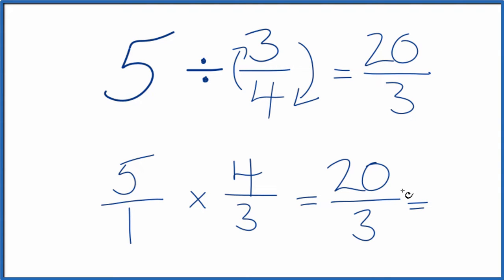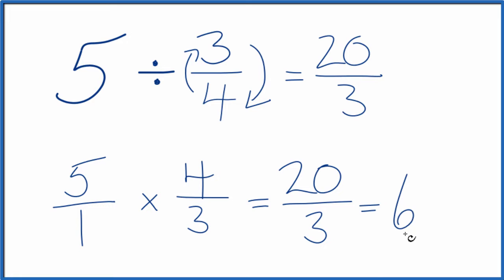3 goes into 20, let's see, 6 times. 6 times 3 is 18, and we'd have 2 left over. So 6 and 2 thirds.